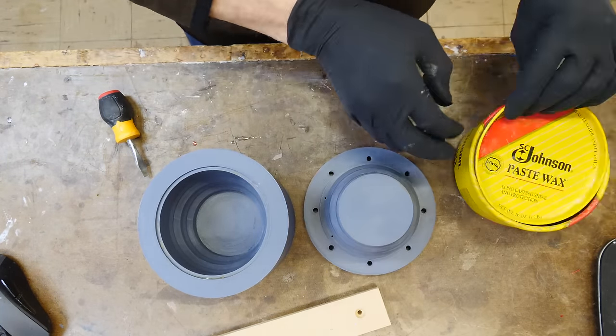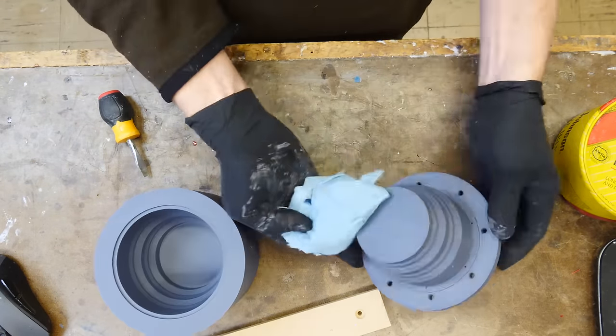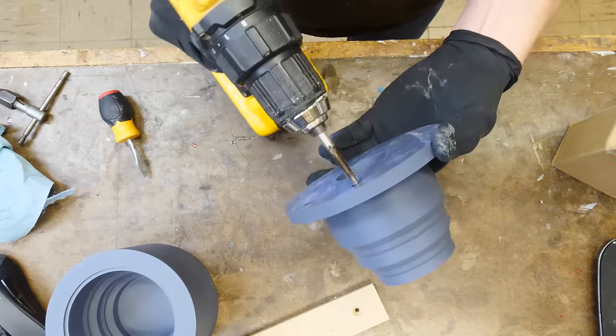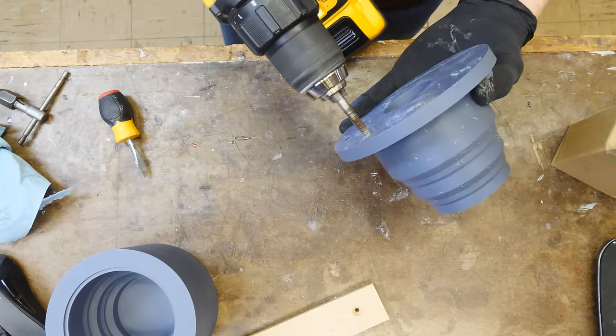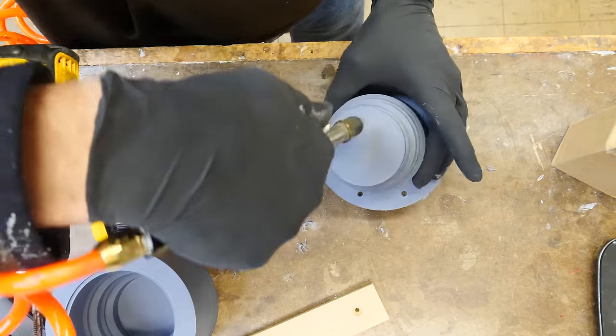Now I'm going to use a little bit of Johnson's paste wax here. This fills in a little bit of the print lines and will smooth out the print a tiny bit. Again, I'm chasing the quarter-20 holes with the tap.